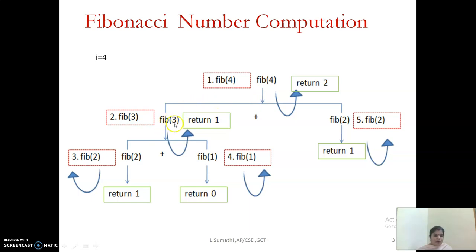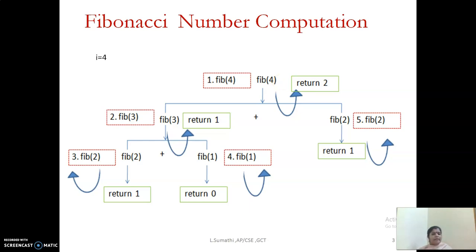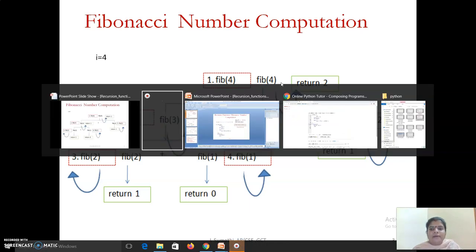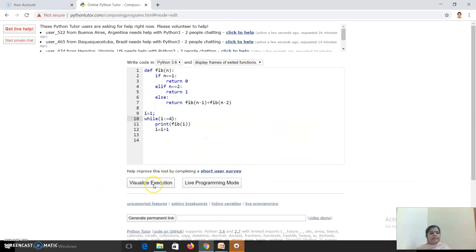When fibonacci(4) is called, since n is greater than 2, it calls fib(3) plus fib(2). Fib(3) in turn calls fib(2) plus fib(1): fib(2) returns 1, fib(1) returns 0, so fib(3) returns 1. Then to evaluate the full expression, fib(2) is called, which returns 1. So 1 plus 1 equals 2, which is returned to the main function and printed as 2. This is how the recursive function works.